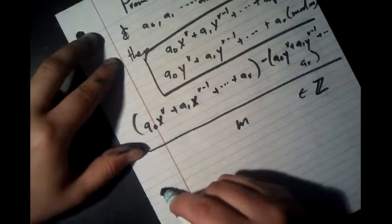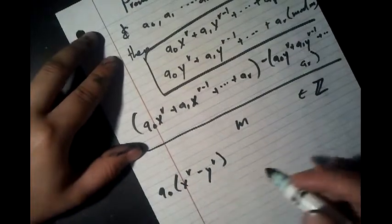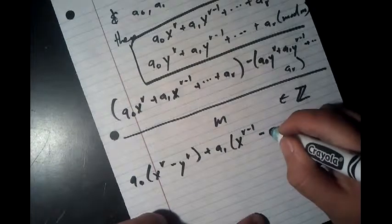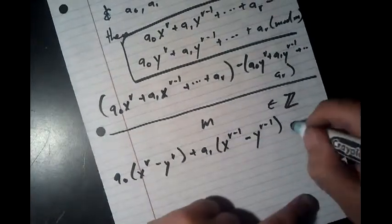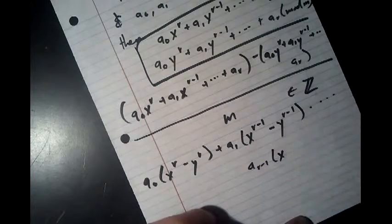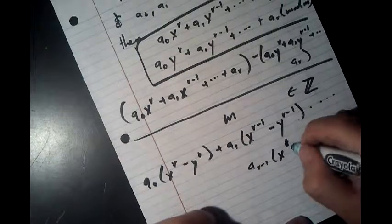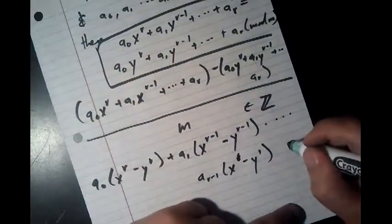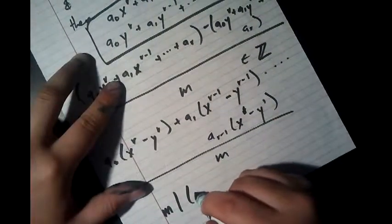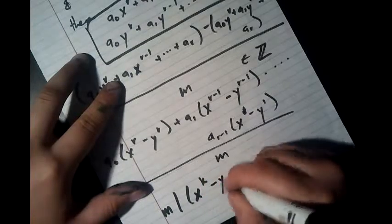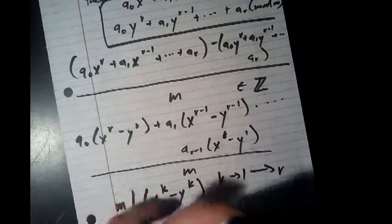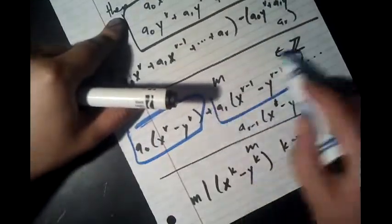So now we're just going to group things. So we're going to get a_0, and we're going to group it as x^r minus y^r, and then we're going to get a_1, and we're going to group it as x^(r-1) minus y^(r-1), and we're going to go so on, and it's going to go all the way to a_(r-1) x^1 minus y^1 so x minus y.